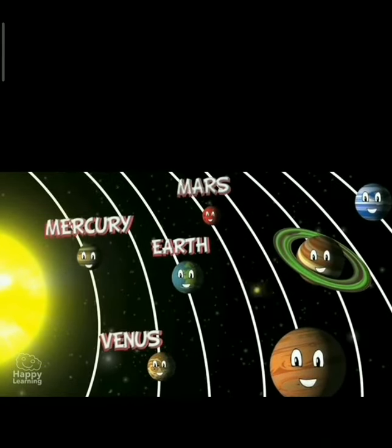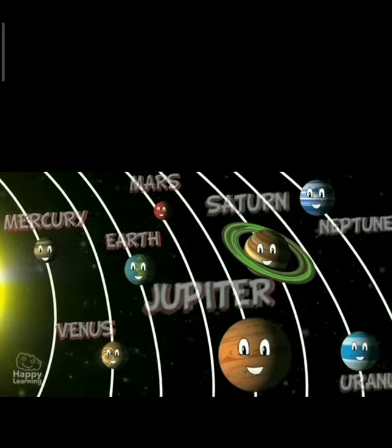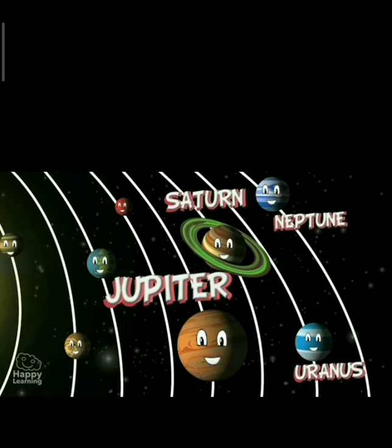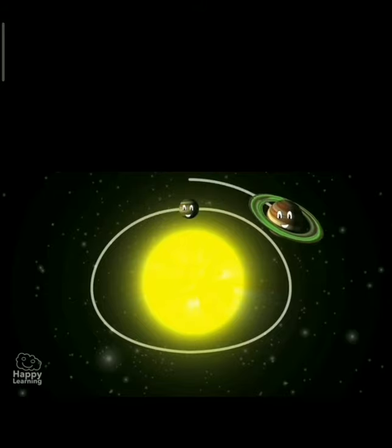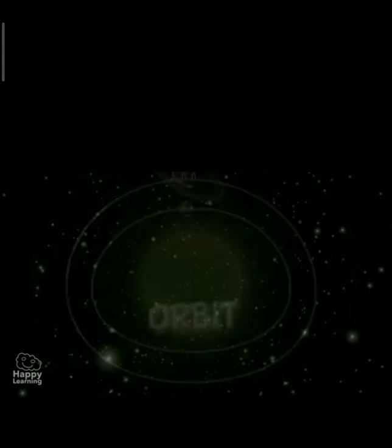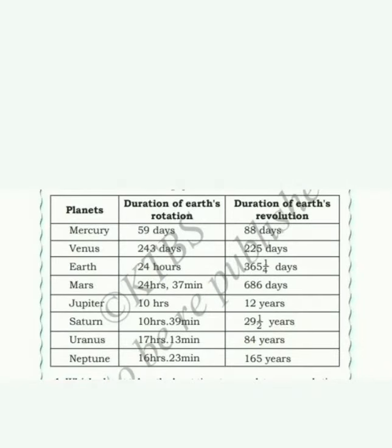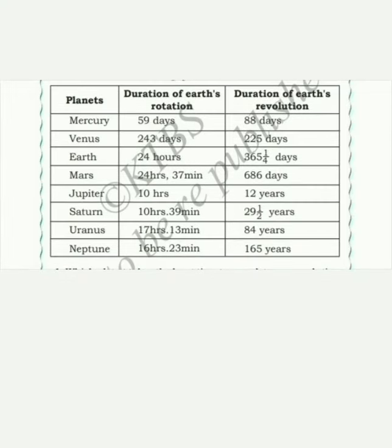Now I am going to show you a list of the period of rotation and revolution of each planet, given on the basis of Earth's timing. We know that every planet has the characteristics of rotation and revolution. There are 3 columns: one is planets, second is duration of rotation, and next is duration of revolution. From this we can easily identify the rotation and revolution for each planet.